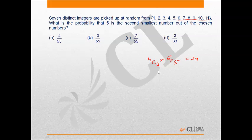The total number of ways in which seven distinct integers can be selected out of 11 is 11C7. Therefore, the required probability will be the number of favorable cases, 24, upon the total number of cases, 11C7. This comes out to be 4 by 55, which is option A.